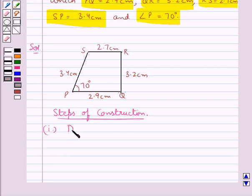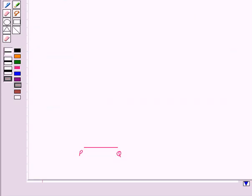First we will draw PQ equal to 2.9 cm. So this is the line segment PQ of length 2.9 cm.